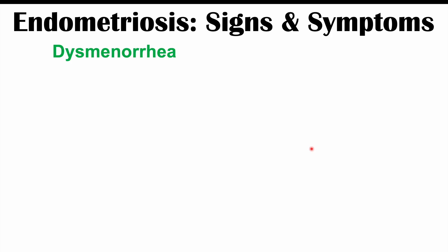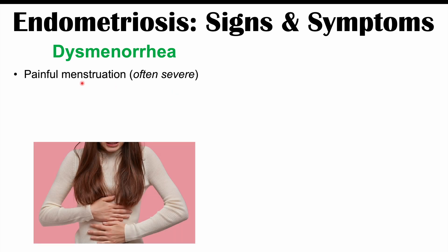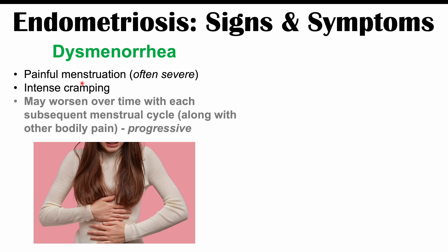Another very important symptom of endometriosis is dysmenorrhea, which is painful menstruation or a painful period, and it is going to be severe. Patients can often have intense pain and cramping, and what will be noted is that the pain worsens over time with each subsequent menstrual cycle. This goes along with the pelvic, lower abdominal, and lower back pain discussed before — this is what we would describe as progressive, meaning with each menstrual cycle the pain gets worse and worse.